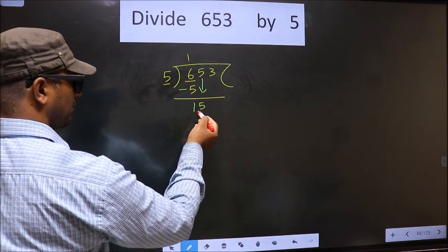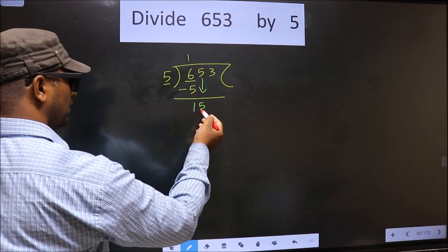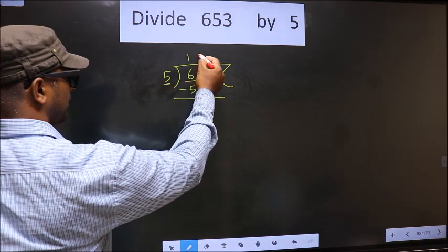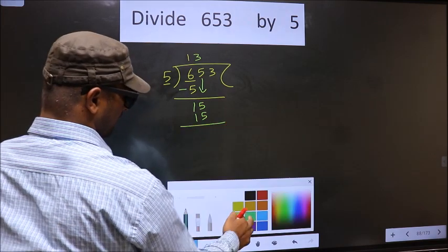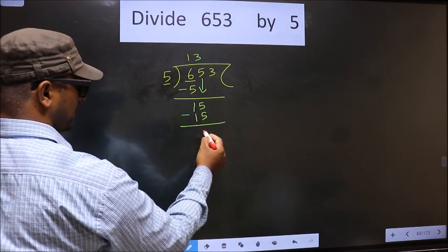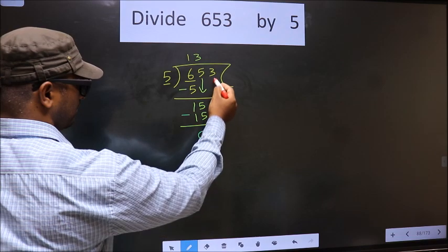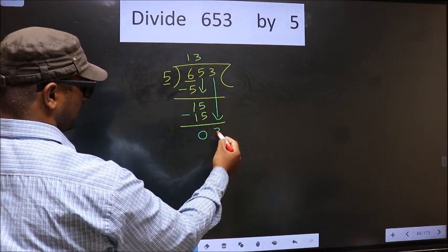Now here we have 15. Here 5. When do we get 15 in five table? 5 times 3 is 15. Now you subtract. 15 minus 15, 0. Now you bring down beside number. So 3 down.